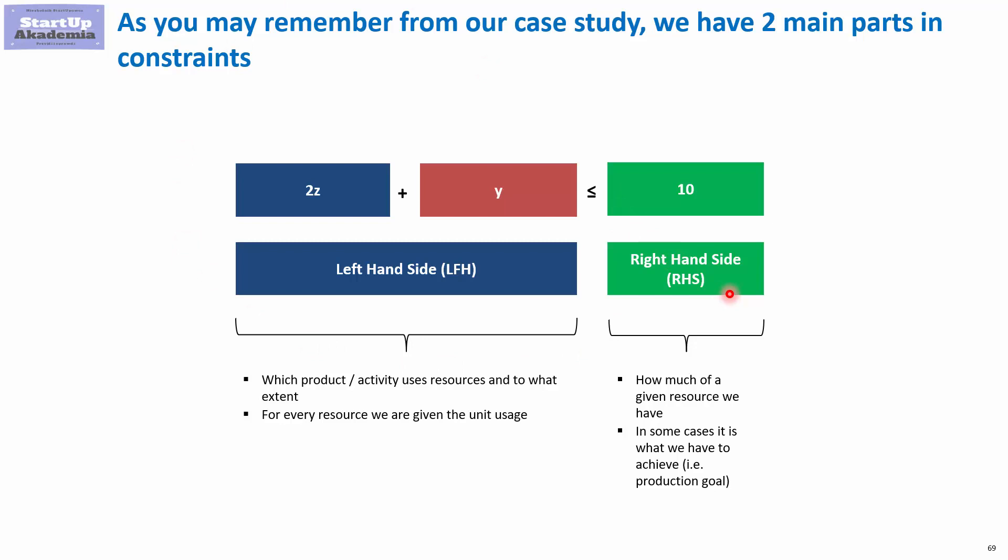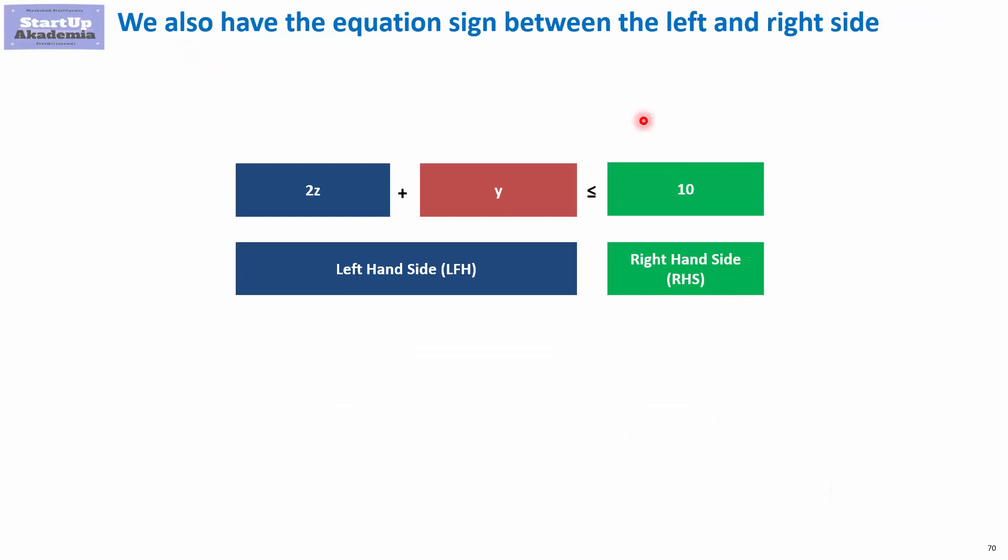In short, we always have a left-hand side and right-hand side. The left-hand side describes to what extent certain resources are used by our production plan, our variables, and then the right-hand side describes our resources or goal. Obviously we also have the sign between the left-hand side and right-hand side.